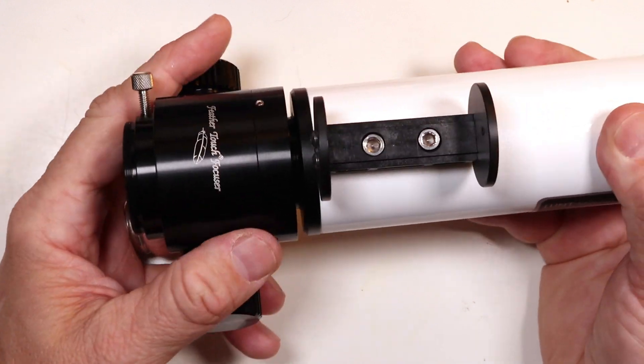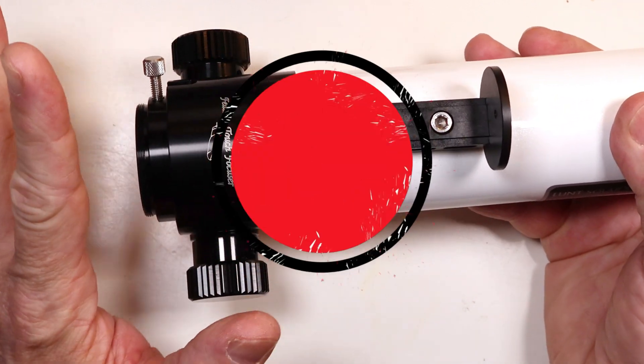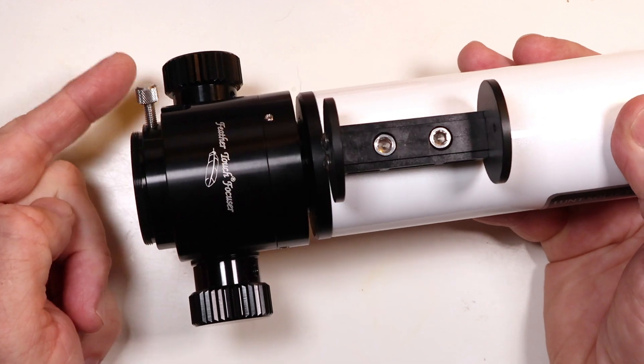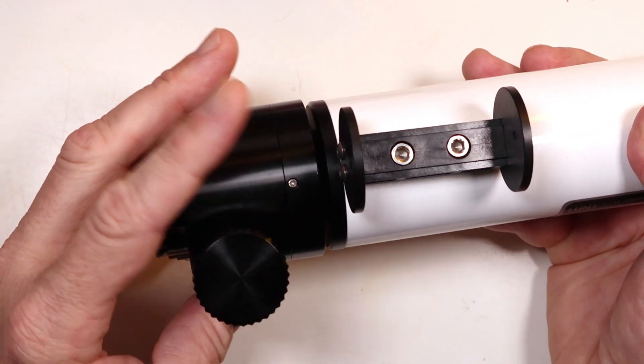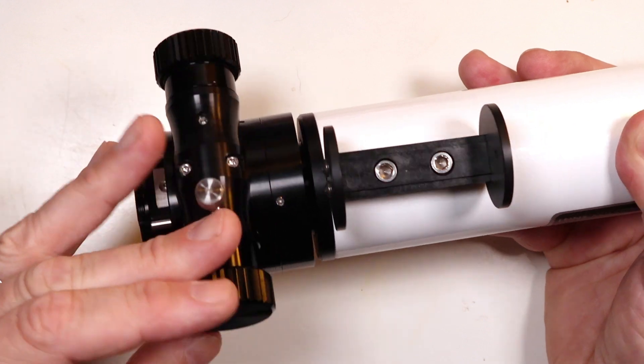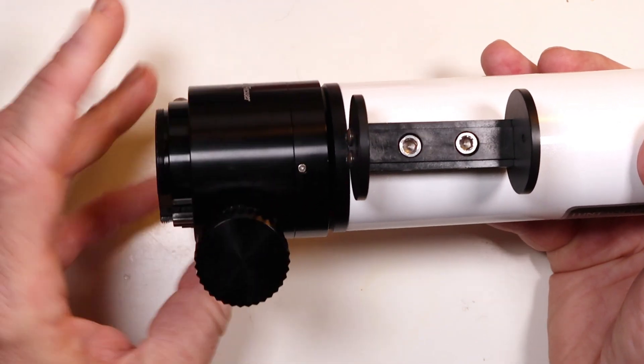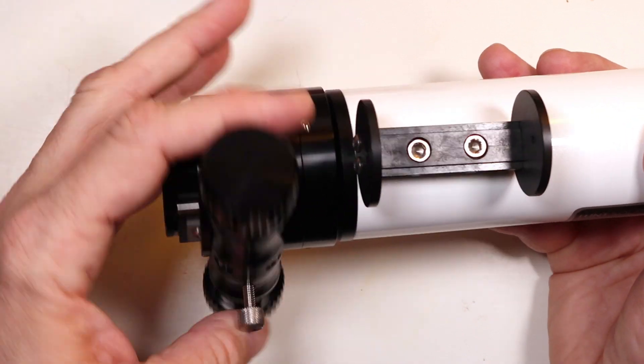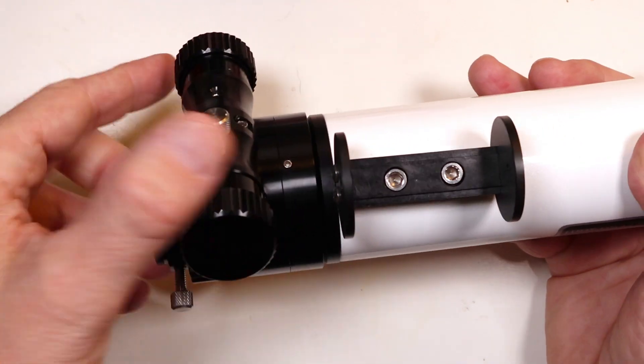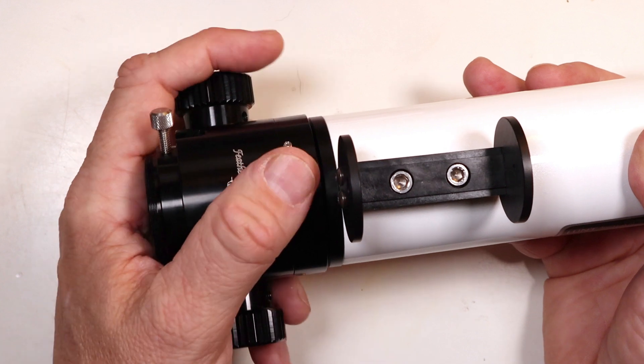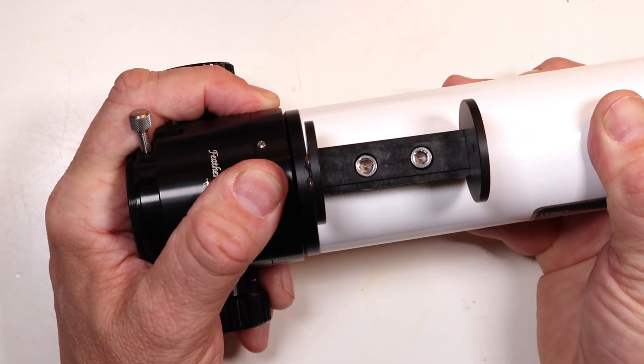Now, if it starts feeling tight or anything unusual, I'm going to stop and unscrew it and try again. I'm going to keep turning this until this focuser is on tight onto the draw tube.